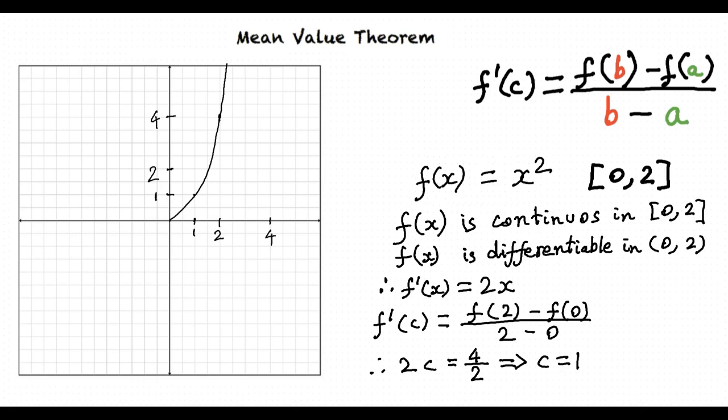Hence, our desired point has an x-coordinate of 1. And therefore, the corresponding y-coordinate is 1 from the relation f(x) equals x squared. Therefore, the desired point is (1, 1).